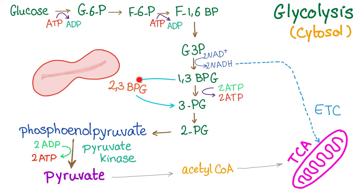There is another pathway for 1,3-bisphosphoglycerate: it can be converted into 2,3-bisphosphoglycerate and then back to 3-phosphoglycerate. This pathway is very important because any block in the main pathway will lead to an increase of 2,3-bisphosphoglycerate. This will shift the oxygen dissociation curve to the right, which means hemoglobin is releasing oxygen to the tissue. Back to our pathway: 2-phosphoglycerate will be converted into phosphoenolpyruvate. Pay attention here.